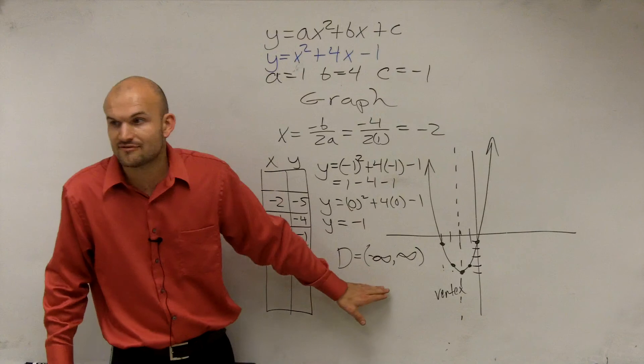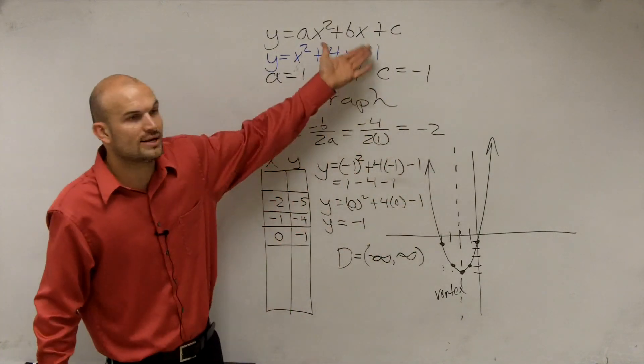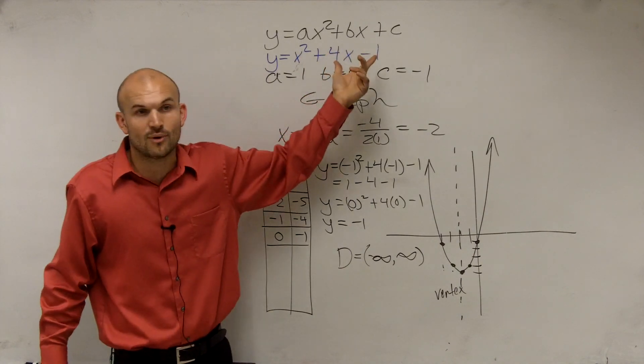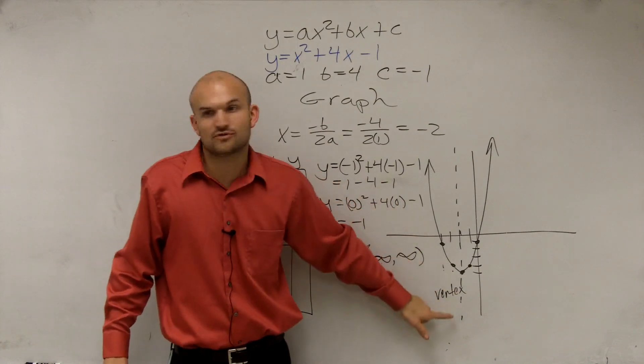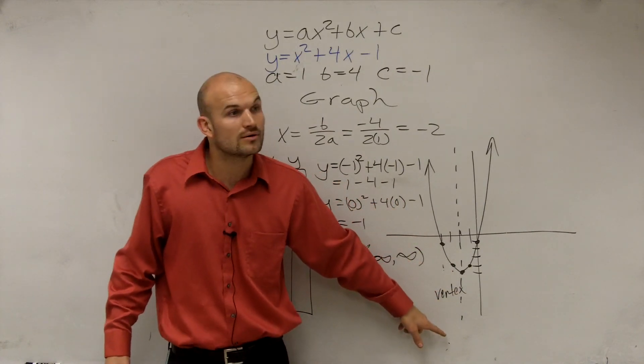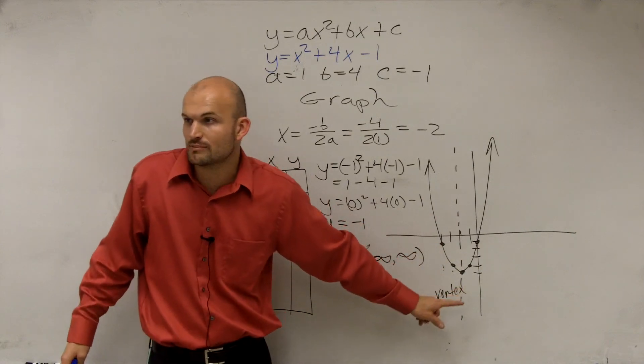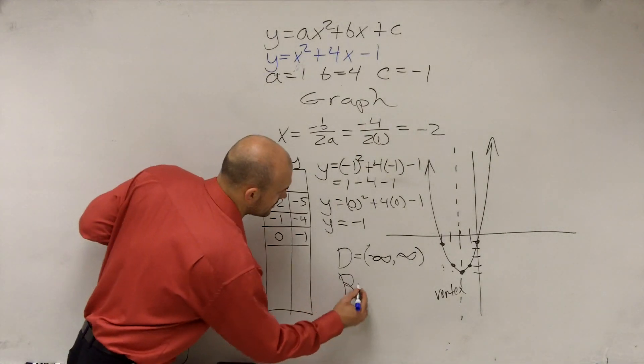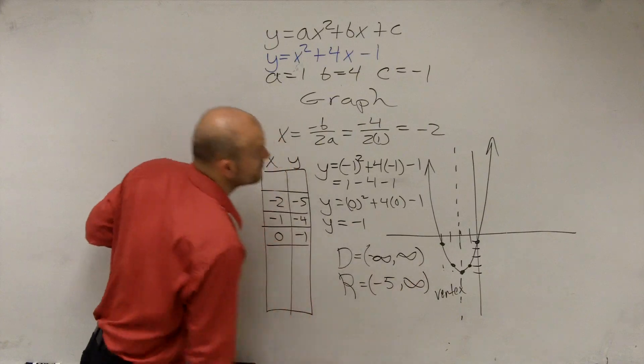However, let's look at finding the range. No matter what number I plug in, no matter what number I plug in for your range, am I going to get, can I get any answer for the y? No. Can I get negative 20 down for the y? No. The range is constricted. The lowest the range goes is from negative 5. Well, what's the highest the range goes? Infinity. So you say the range is equal to negative 5 to infinity.